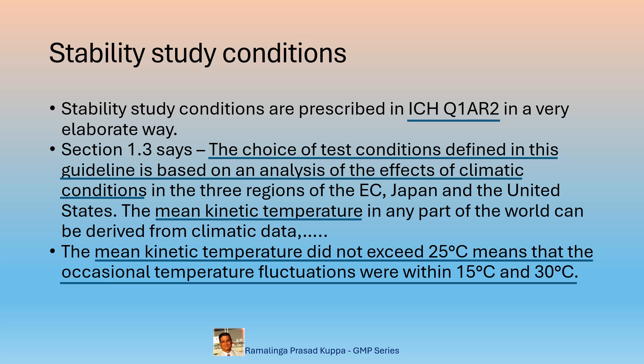For example, since the limit is between 15 and 30 degrees, can we store this product at 27 or 29 degrees Celsius? The mean kinetic temperature will fail in such cases.